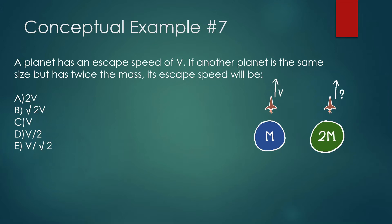A planet has an escape speed of V. If another planet is the same size but has twice the mass, its escape speed will be blank. We want to know what the escape speed will be when escaping from a planet that has twice the mass but the same size. Right away, we know it's going to be harder to escape from this planet, so the escape speed should be more than V — it should either be answer A or answer B.